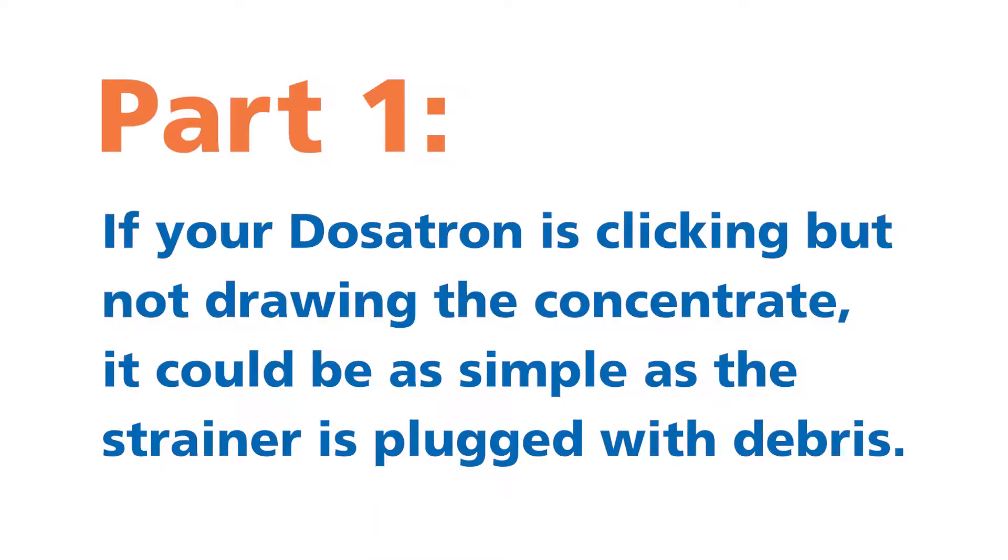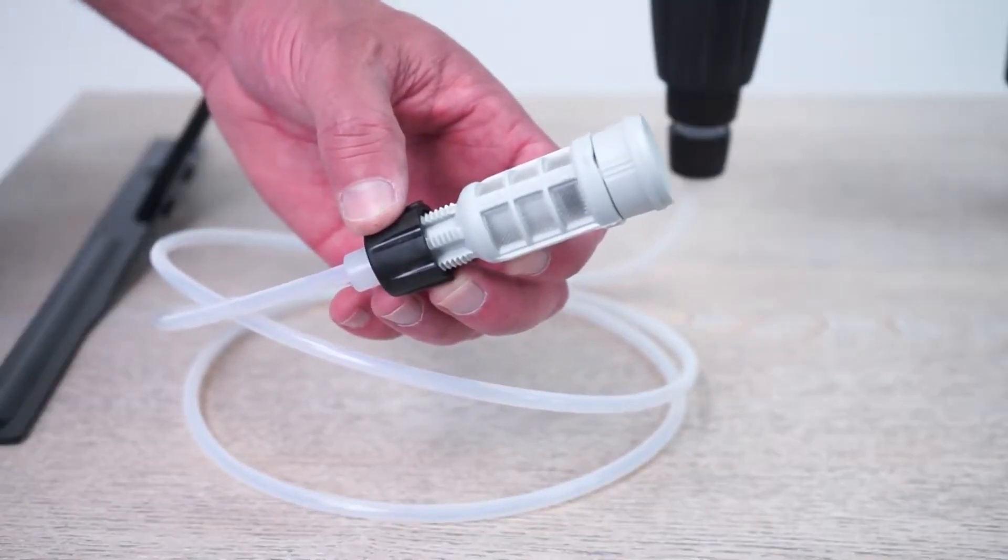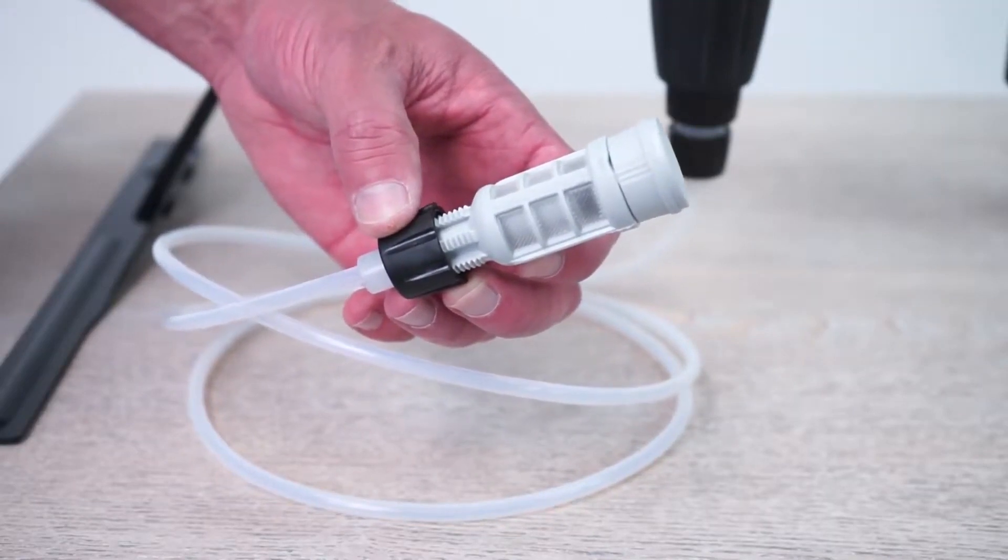Part one: if your Dosatron is clicking but not drawing the concentrate, it could be as simple as the strainer is plugged with debris. Take a look at the strainer. If it is clogged, just clean it and retest your Dosatron unit.